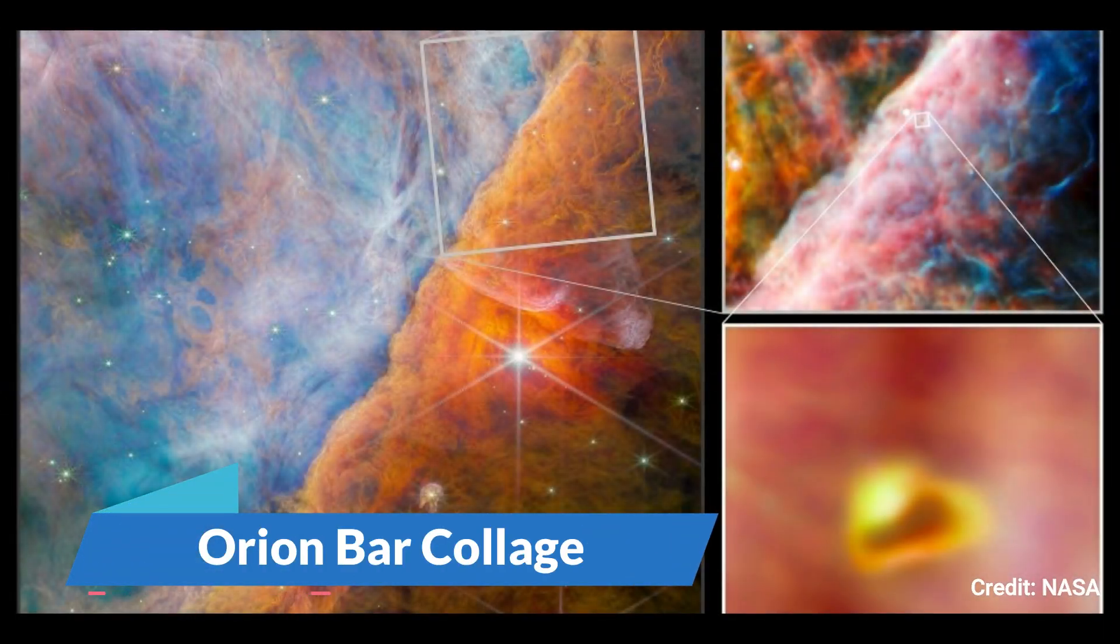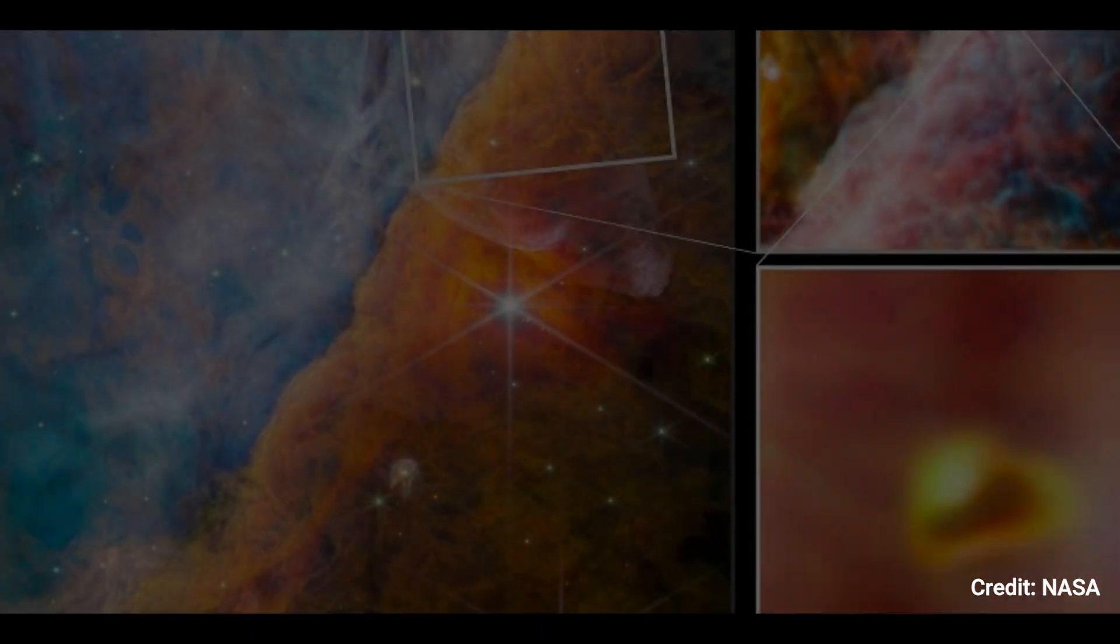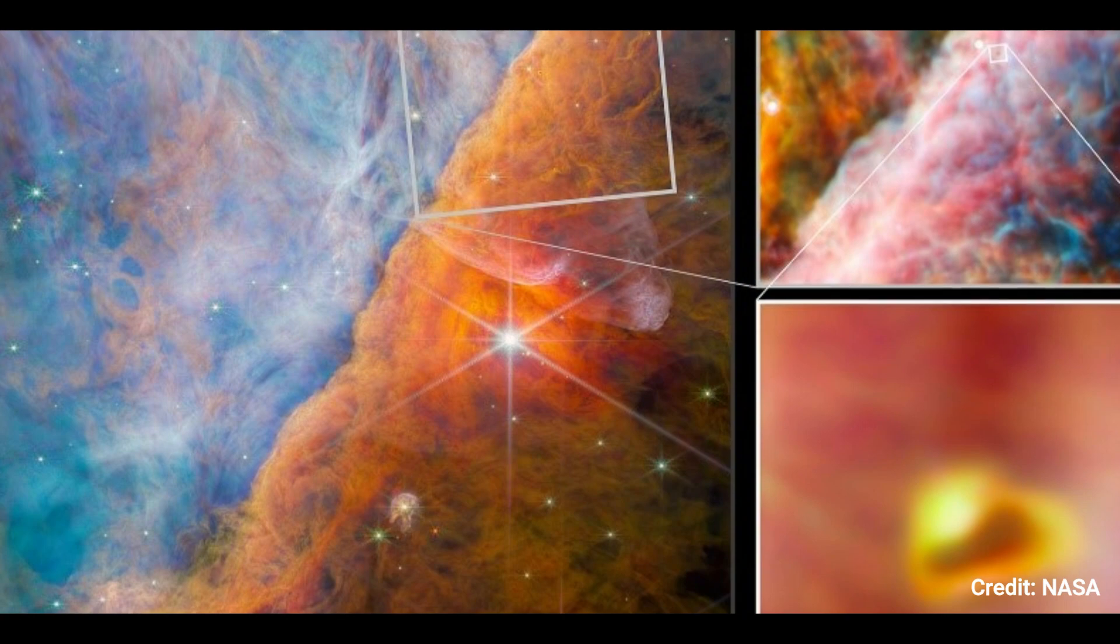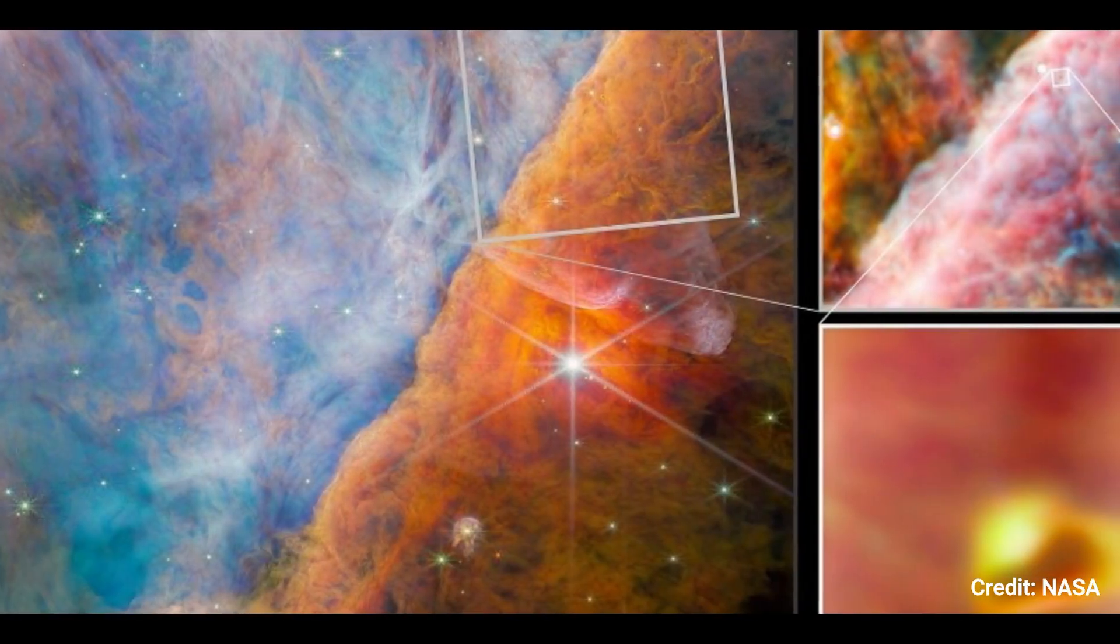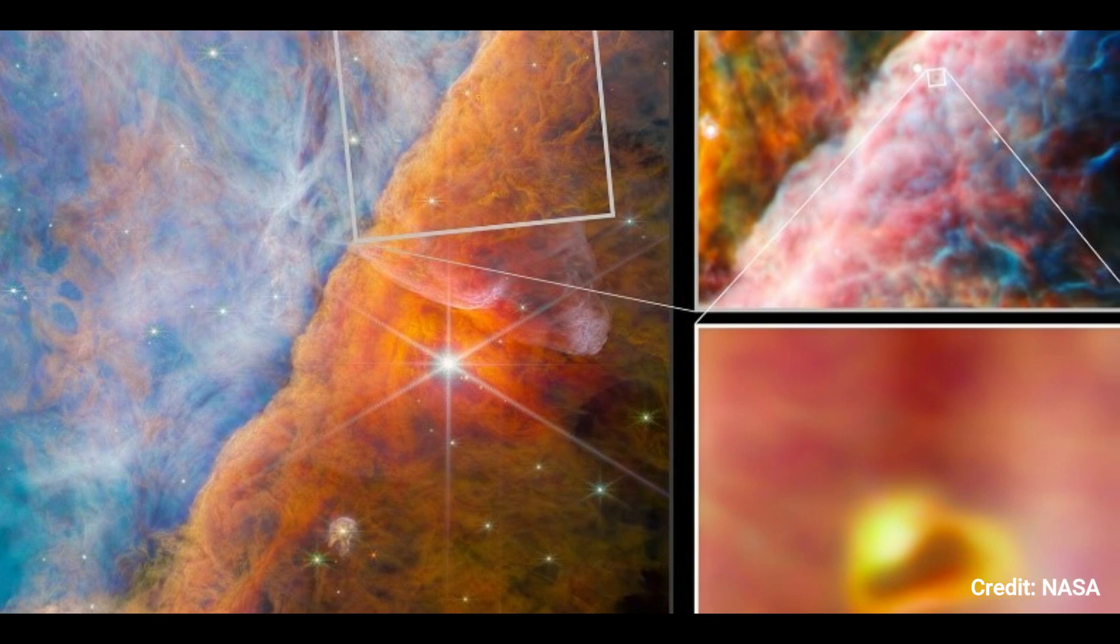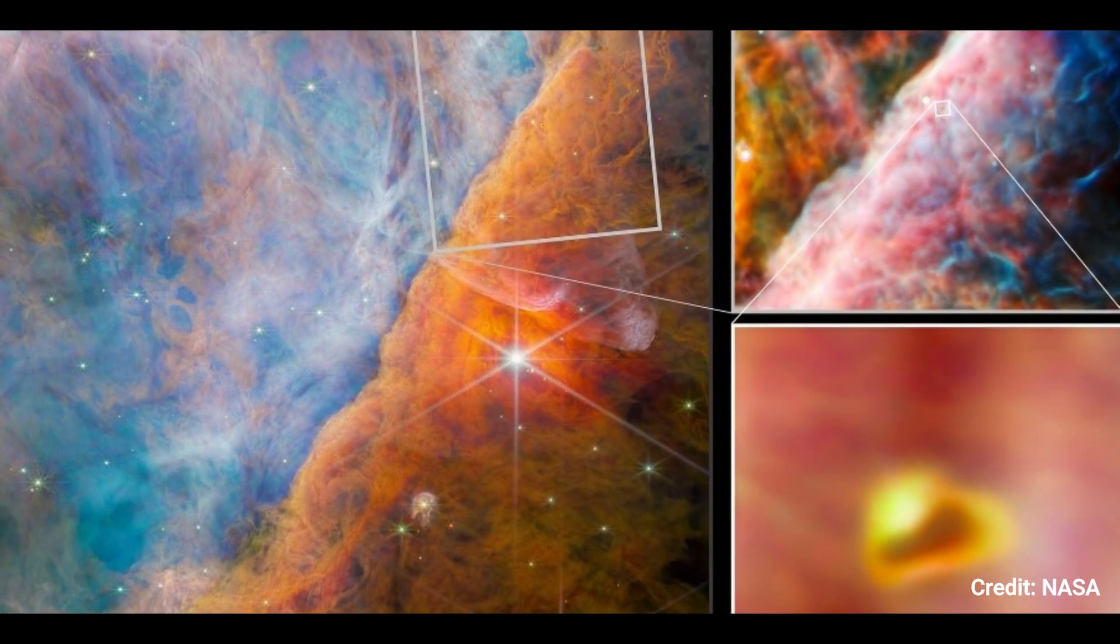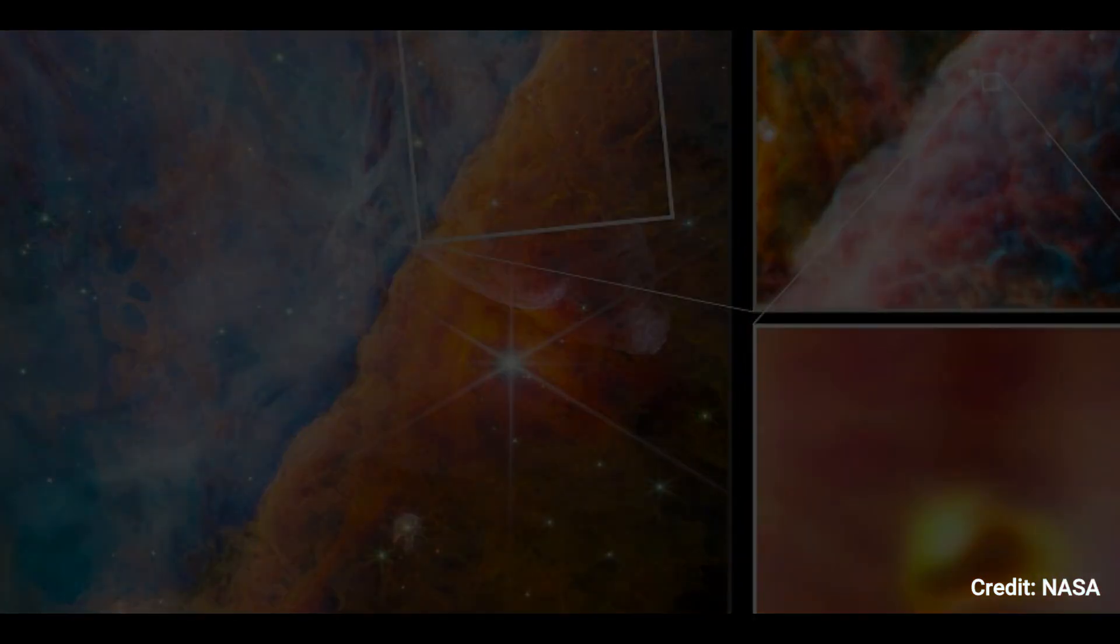Number 4. Orion Bar Collage. These Webb photos depict the Orion Bar, a section of the Orion Nebula. It is a place where the Trapezium Cluster's intense ultraviolet radiation interacts with dense molecular clouds found off the upper left corner. The stellar radiation's energy is progressively degrading the Orion Bar, which has a significant impact on the molecules and chemistry in the protoplanetary disks that have formed around young stars here.